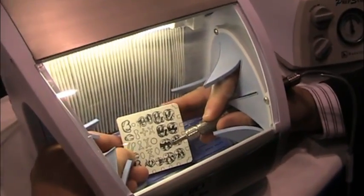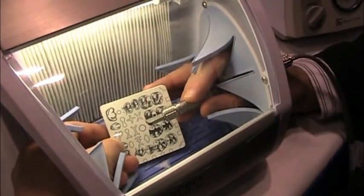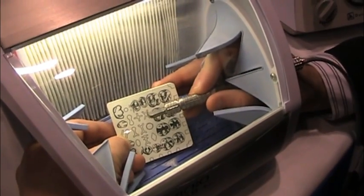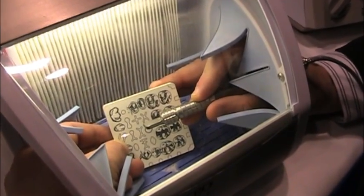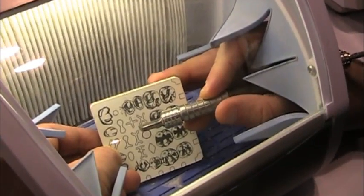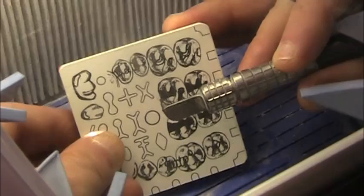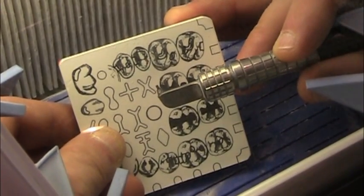For demonstration purposes, we have a ceramic block that has about the hardness of regular tooth structure, and I'm going to show you the accuracy that we can use the PrepStart H2O. So I'm going to activate it. First, I'm going to turn it on, and you'll be able to see the particle beam coming out of it.